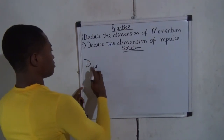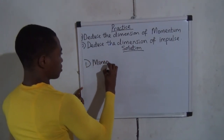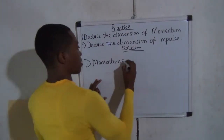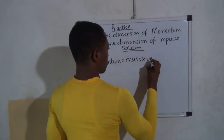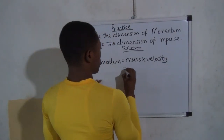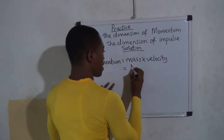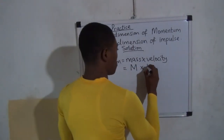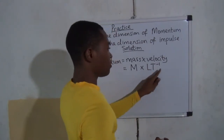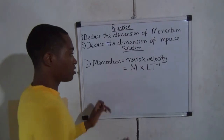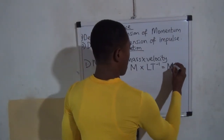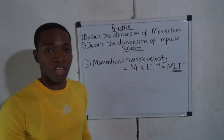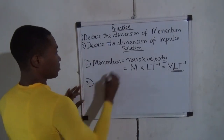Number one: momentum. What is the formula for momentum? Mass multiplied by velocity. What is the dimension of mass? Capital letter M. The dimension of velocity is LT to the power of minus one — that is displacement divided by time. So when you combine this, you get MLT to the power of minus one. Very easy.